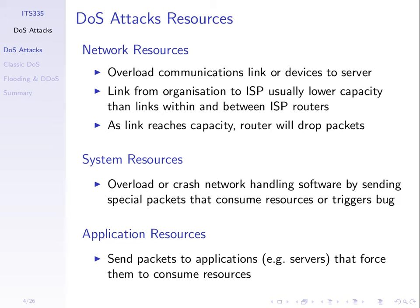If many packets are sent and a link gets overloaded, eventually packets start to get dropped. If capacity is 100 megabits per second but someone is sending at 200 megabits per second, packets get to a router and the router can only send out at 100 megabits per second — it must drop some. Packets from normal users will not get to the server. That's an example of exhausting network resources.